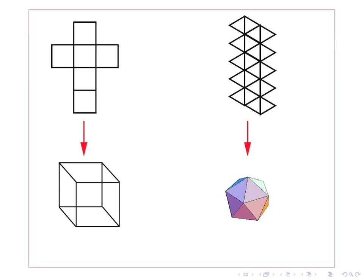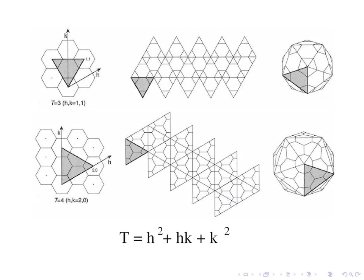Just as a rectangular grid can lay out blueprints for a cube, a hexagonal grid can lay out blueprints for an icosahedron. By choosing a coordinate in the HK plane, we form a triangle with the origin and take 20 copies of that triangle to form an icosahedron.